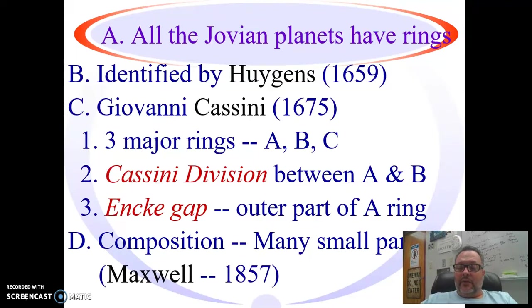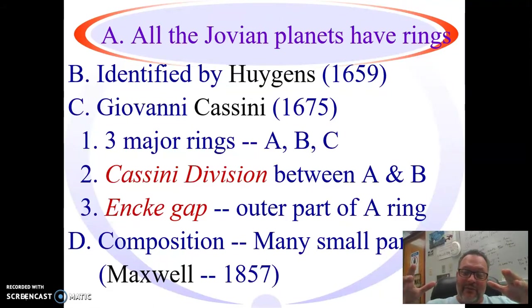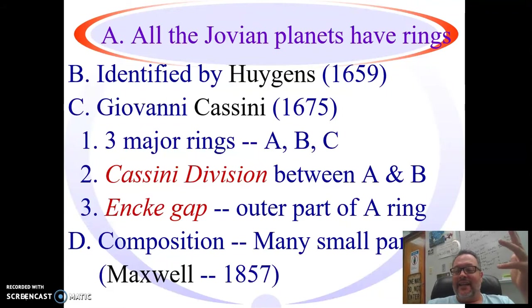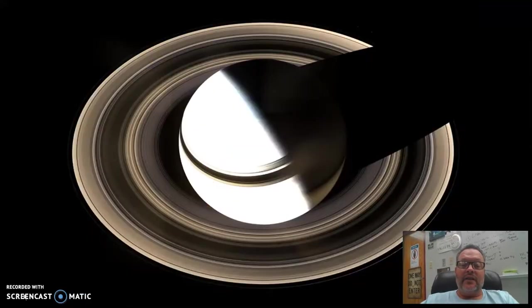The person that came along, one of the great physicists of the 1800s, James Clerk Maxwell, who we normally associate with electricity and magnetism, he actually did the calculation that a giant ring couldn't actually exist. You couldn't have a big solid ring. The physics doesn't work out. So he's the first one to say, hey, this has to be a bunch of particles. I think a lot of students think that they're rocky particles, but they're actually mostly ice, as we'll see in just a bit.